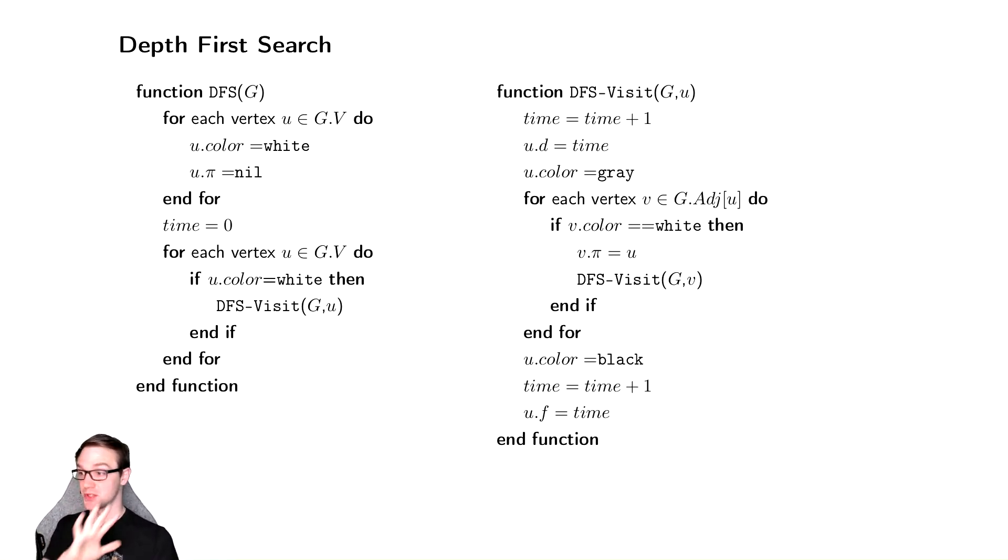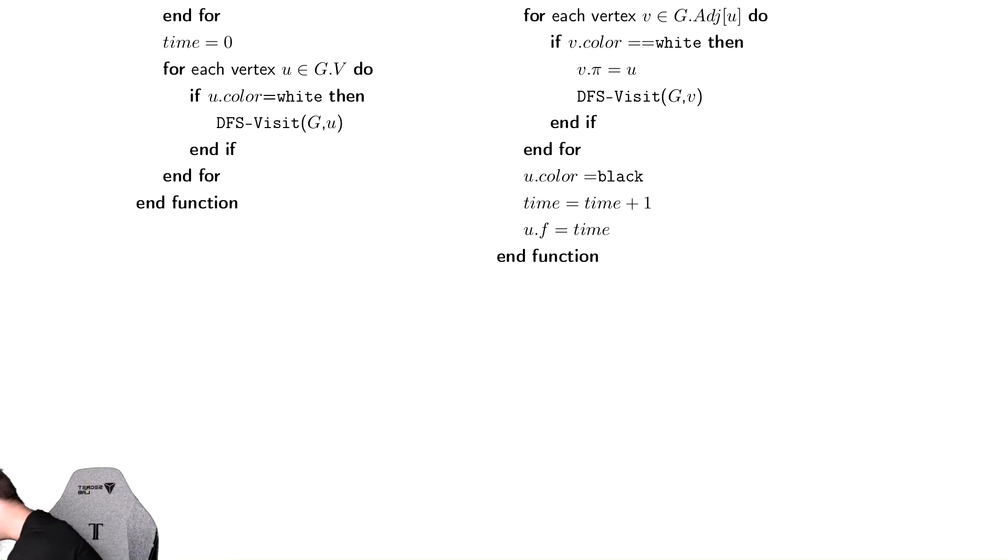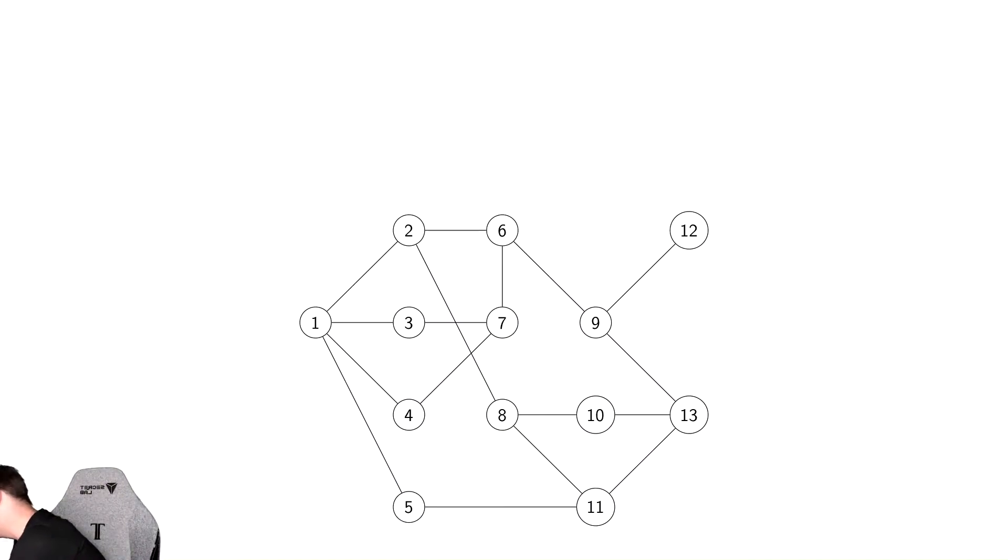If you remember, I described Depth First Search as we start at a vertex and choose a child, then choose a child of that, and a child of that, and a child of that, and then you might have to backtrack up. So we're going to choose a child, then occasionally backtrack up if we run out of places to go.